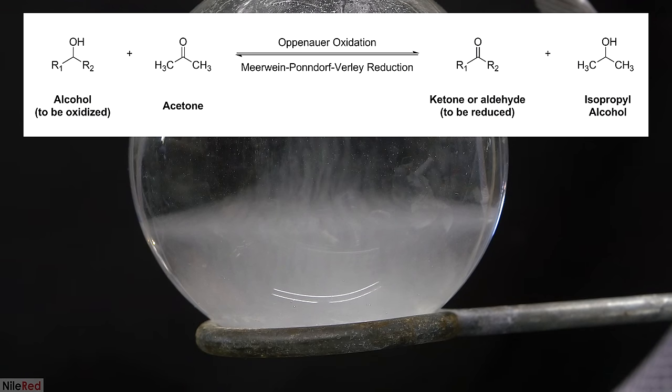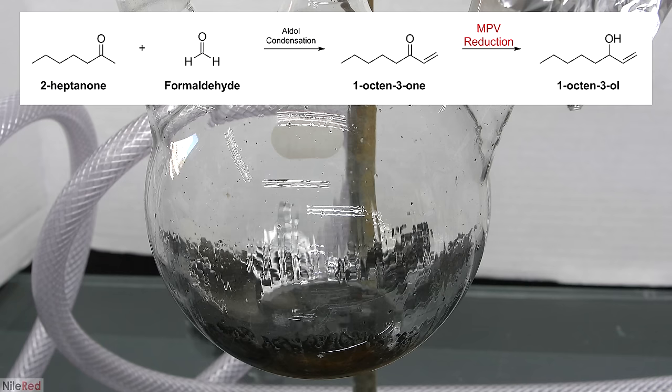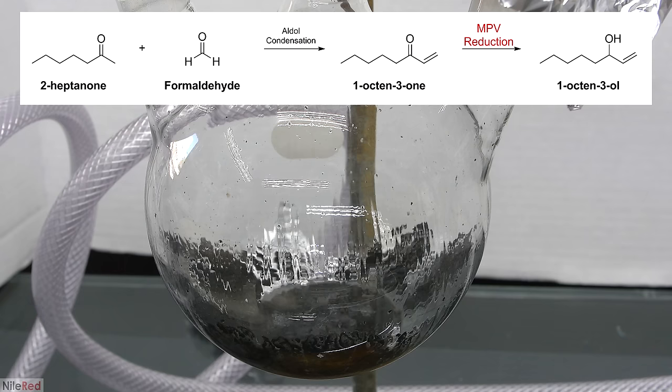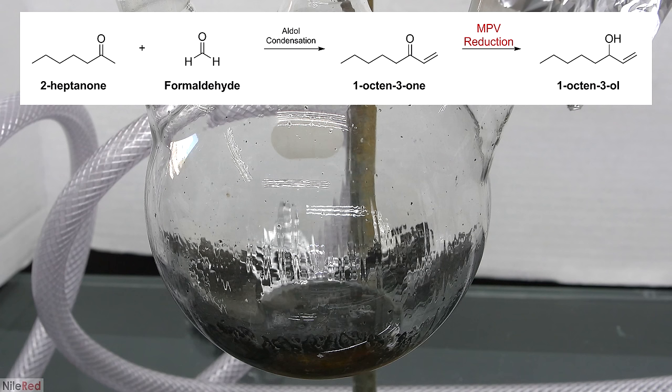The direction of the reaction depends on the starting material. I plan to use it in an MPV reduction to make 1-octen-3-ol, which is a chemical attractant for biting insects. I've shown the overall pathway, and highlighted in red where the aluminum isopropoxide comes into play.